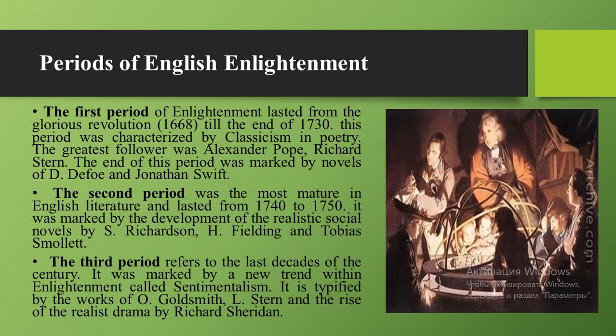The literature of the Age of Enlightenment may be divided into three periods. The first is early Enlightenment, in which the general principles of the Enlightenment ideology were formed. The second is mature Enlightenment, from 1740 to 1760. The third period also indicates the beginning of sentimentalism in the last decades of the 18th century. From an artistic point of view, these decades are characterized in poetry by the classical style.